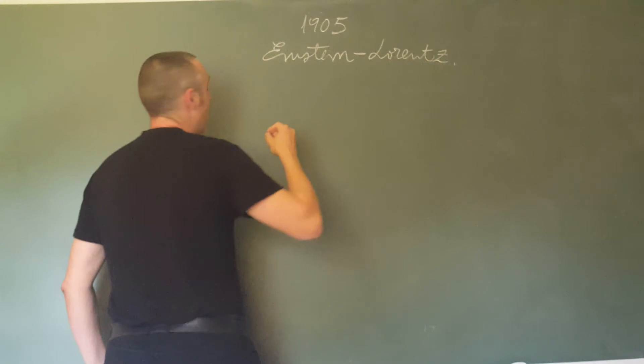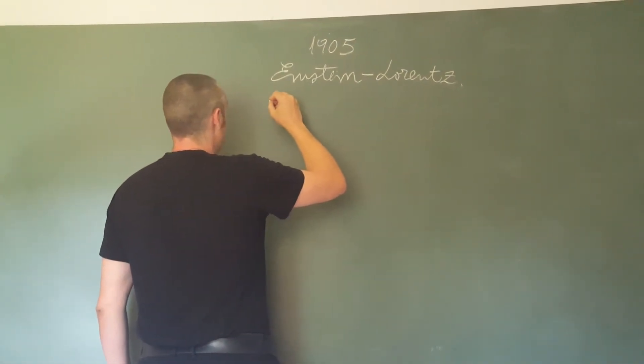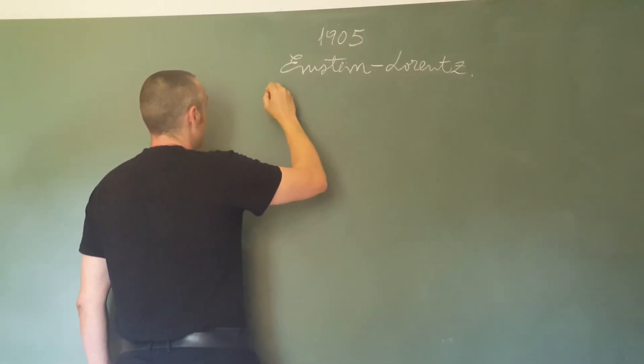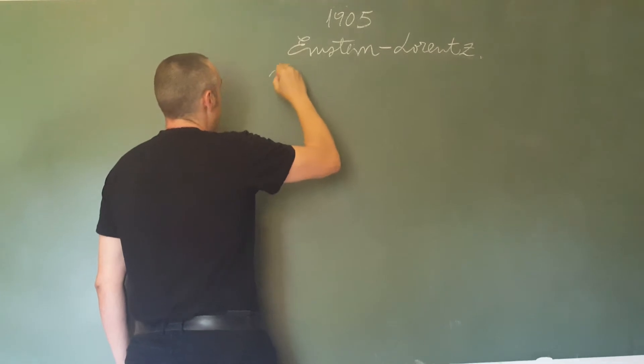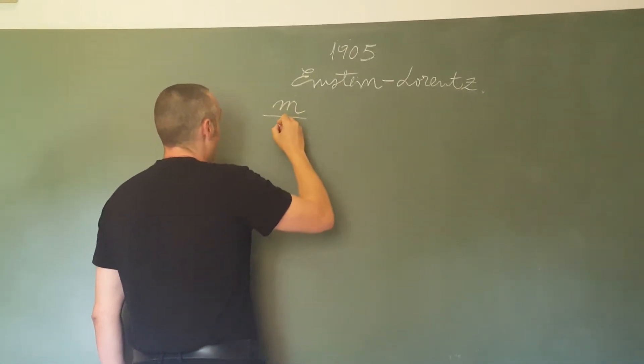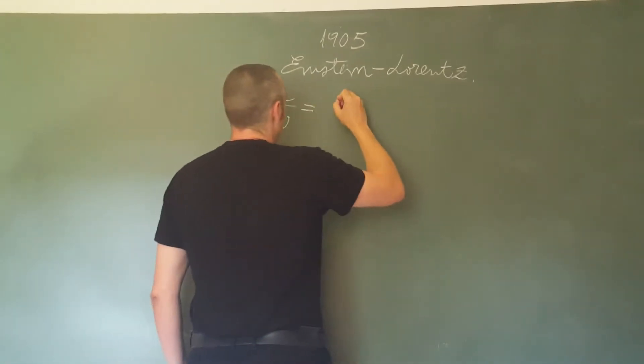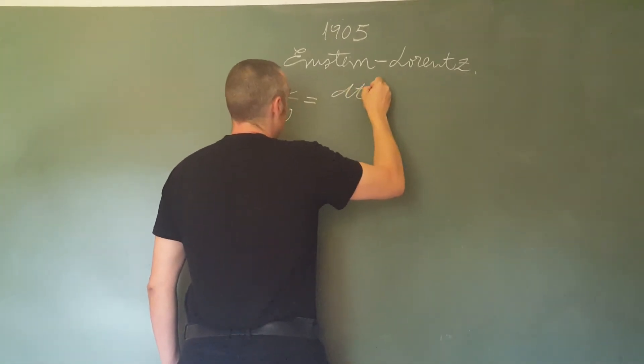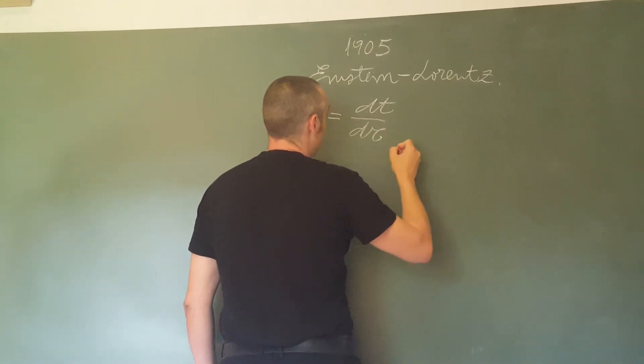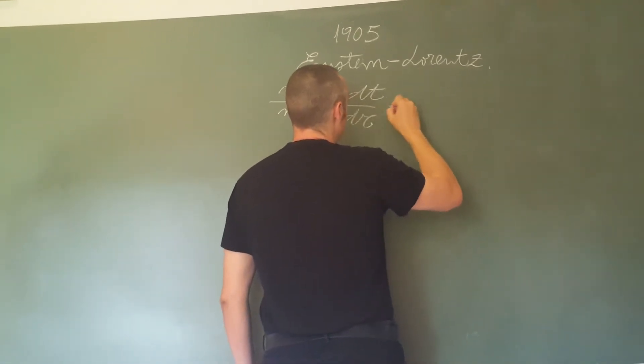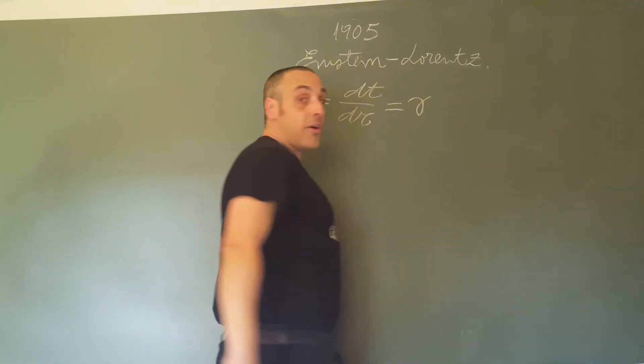The mass of an observed body with respect to its proper mass is equal to the elapsed time of the observer with respect to the elapsed time for the body. And this quantity is equal to the Lorentz factor.